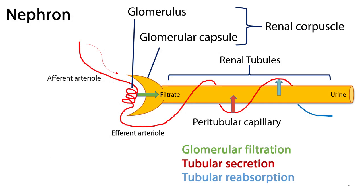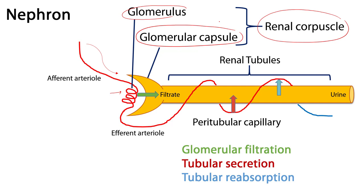Here we have a rather cartoonish view of a nephron. The major portions of a nephron are the renal corpuscle, which has two constituents. There's the glomerulus, which is a very specialized capillary bed surrounded by the glomerular capsule. It's here that the process of glomerular filtration occurs — blood plasma is converted into filtrate. You can think of filtrate as pre-urine.